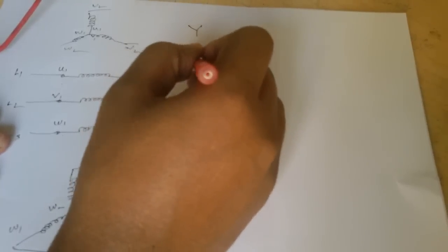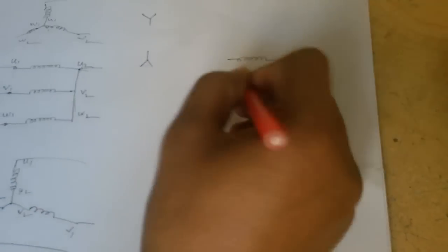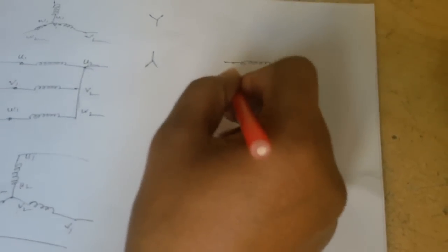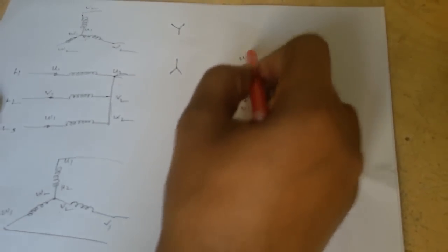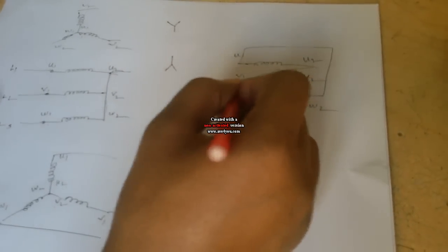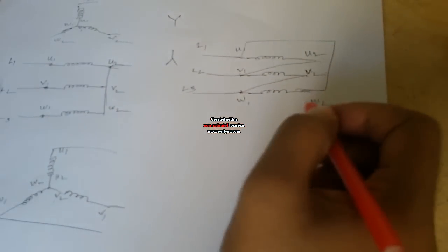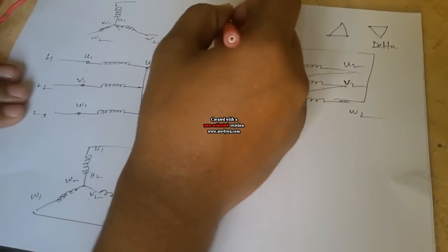A big motor needs to start in star and then switch to delta. Some motors we connect permanently in star. The star connection symbol is Y. For a star-delta motor, we also connect this motor in delta. The 6 terminals are U1, U2, V1, V2, W1, and W2. In delta, one end of each coil connects to the other coil's second end - coil 1 end connects to another coil's end 2. We connect the supply at the junction points. This is called the delta connection, and its symbol is the delta triangle.